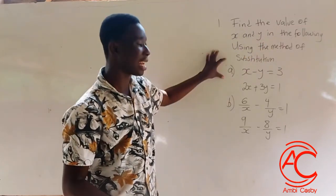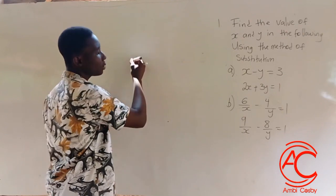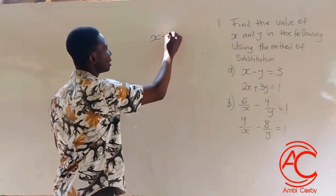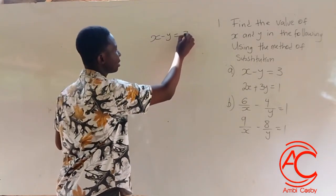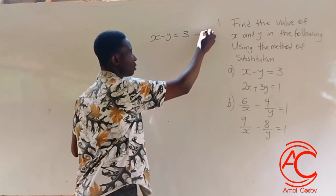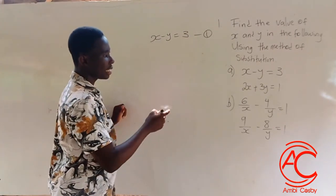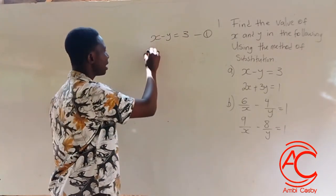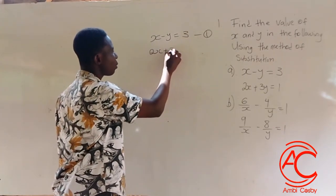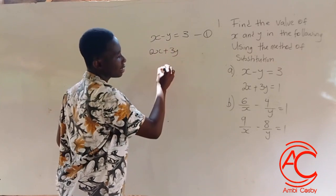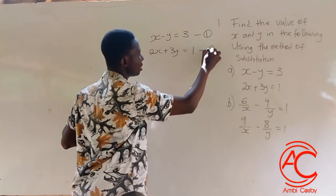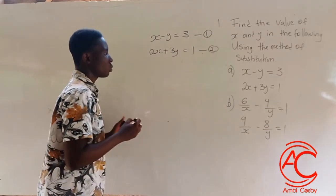So let's start with part E, which is x minus y is equal to 3. I'll name this equation 1. And then we have 2x plus 3y is equal to 1. I'll name this equation 2.